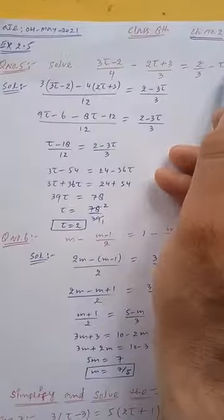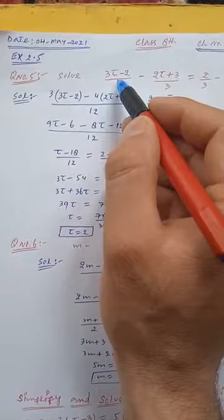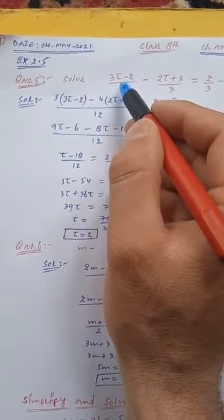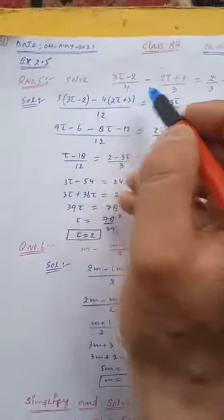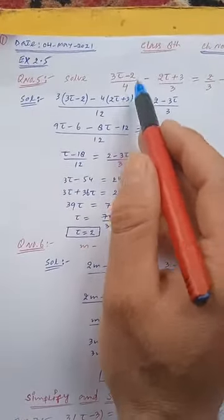We have to simplify this and then you will get the value of t. Here the unknown variable is t, so we are going to solve this and find out the value of t. To simplify this, we will do either by taking LCM or...